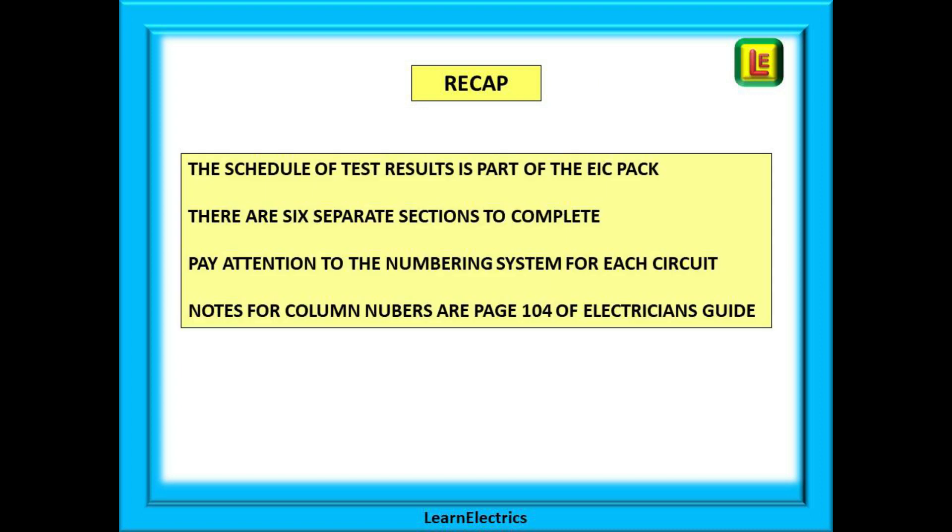A very quick recap. The schedule of test results is not a standalone document. It is part of the pack that is put together with an electrical installation certificate or an electrical installation condition report after a periodic inspection. Look at the schedule as having six separate sections to complete. Completing them one at a time breaks the task down into much easier steps. Good working practice says pay attention to the numbering system. Think about what happens to the numbers if the installation has extra circuits added in the future. And do use page 104 of the electrician's guide to the building regulations. It will help putting information into each column.